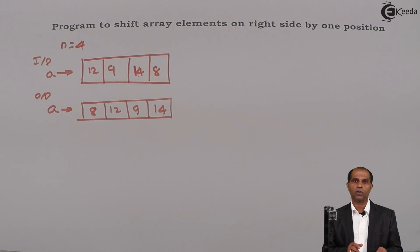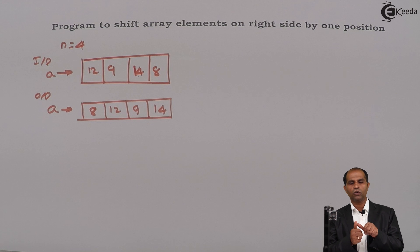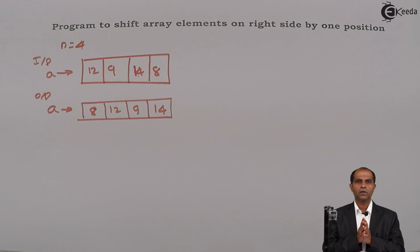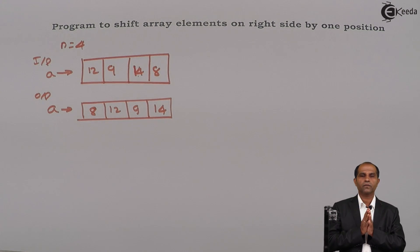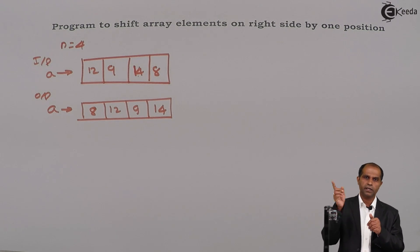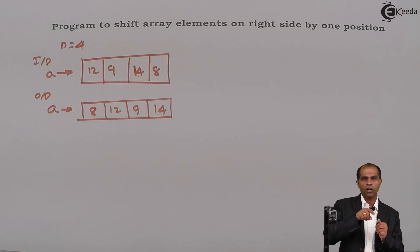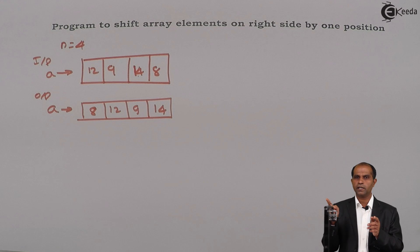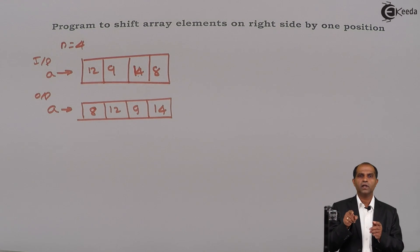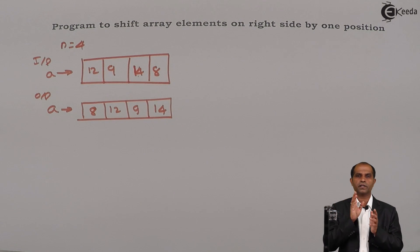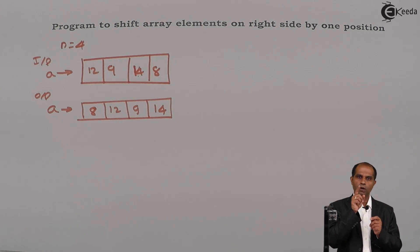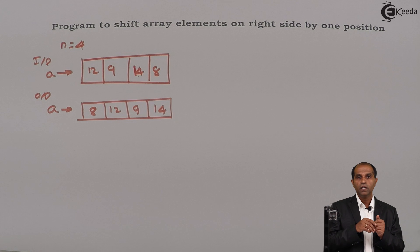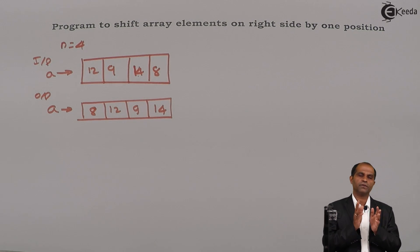A very important and simple logic. Whenever we do a shifting towards right or left hand side — in the next video I will illustrate the left shift, but the logic is still the same. Any cyclic rotation, whether right hand side (anti-clockwise direction) or left hand side (clockwise direction) — when I say right hand side, the elements move in an anti-clockwise direction, and when I say left hand side, they move in a clockwise direction.